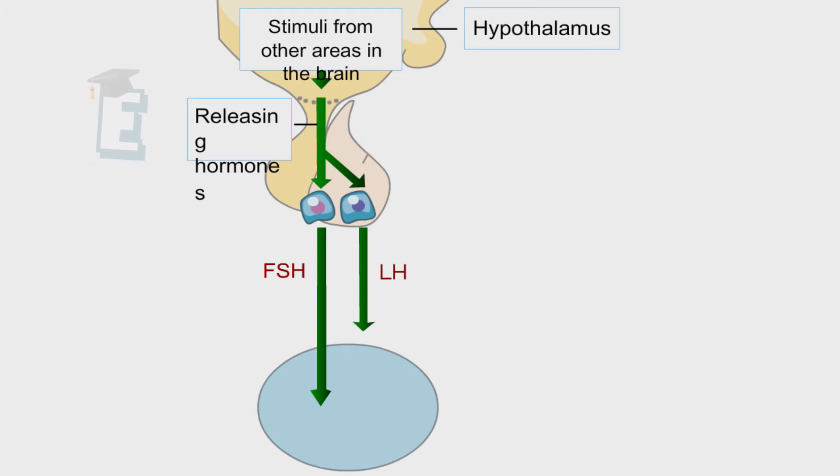In males, those hormones influence the production of testosterone, and then testosterone produces sperm in the testis. While in females,